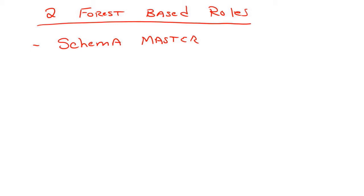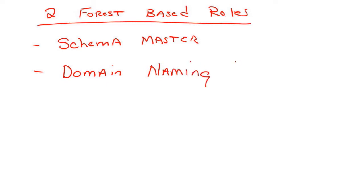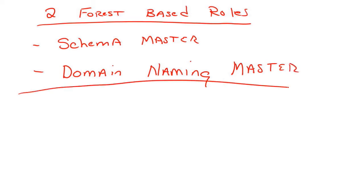So that's what the Schema Master's job is. The Schema Master is running today - you only have one, but it's out there on your network somewhere. The second forest-based role is the Domain Naming Master. This job is one of the easiest jobs - it just makes sure that no two domains are the same.